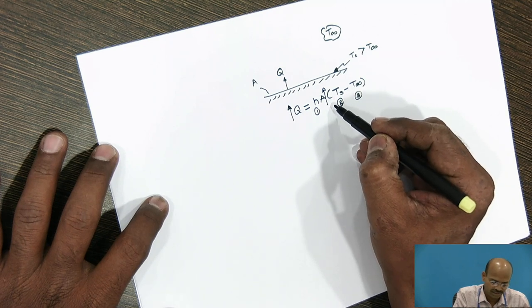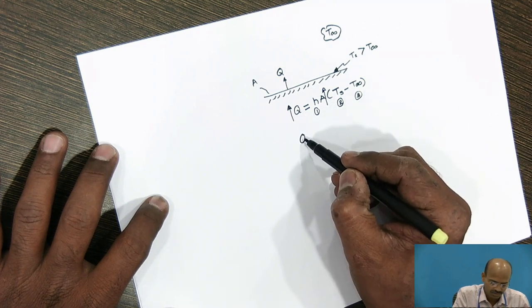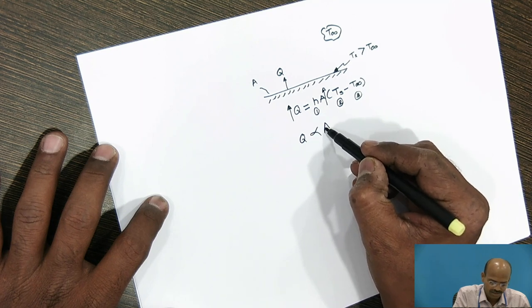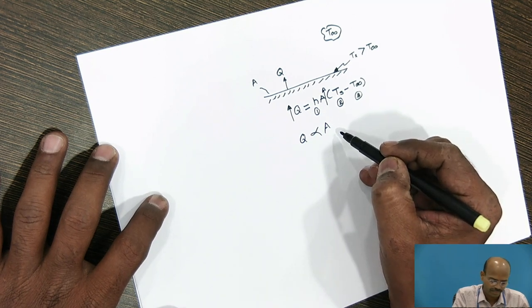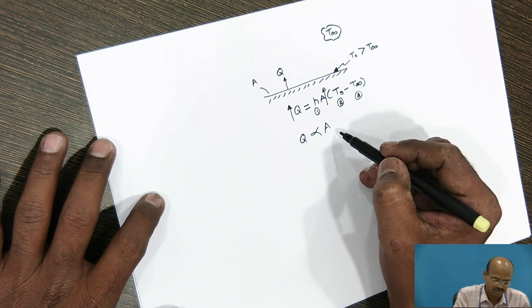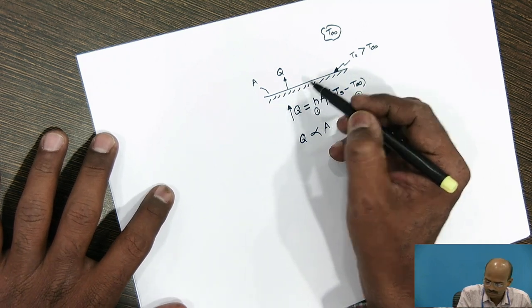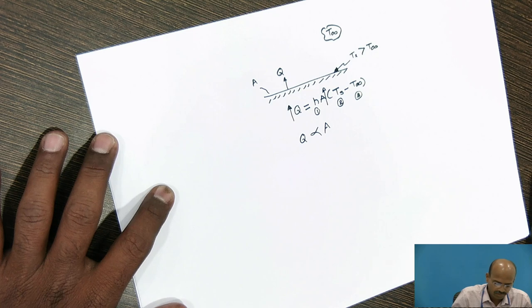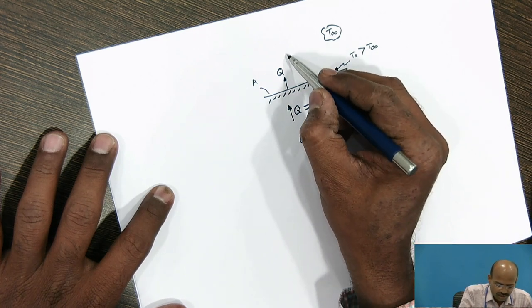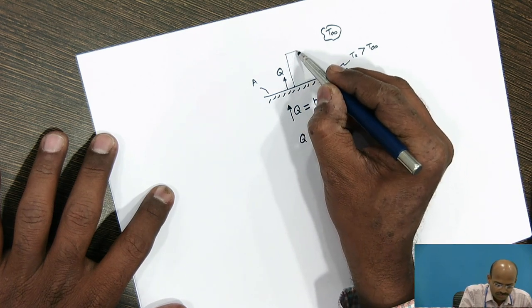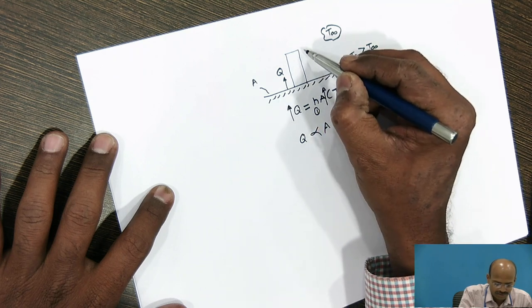So, now, it is fixed that Q can be increased by changing the surface area. Now, how to increase the surface area? So, what we will do?